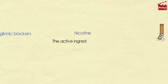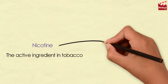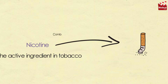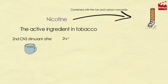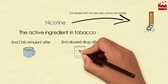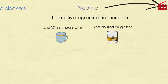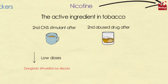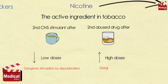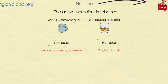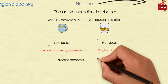The most important example of this group is nicotine, which is the active ingredient in tobacco. It is found in cigarette smoke combined with tars and carbon monoxide. Nicotine is the second most widely used CNS stimulant after caffeine, and it is the second most abused drug after alcohol. In low doses, nicotine causes ganglionic stimulation by depolarization, and at high doses nicotine causes ganglionic blockade.